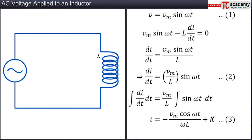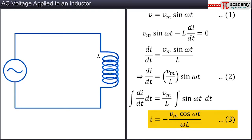Since we know that the voltage source is supplying a time-dependent voltage which is symmetric about zero, we can assume the same to be true of the current. Hence, we take the constant of integration as zero. Equation 3 can then be written as I equal to minus Vm cos omega t by omega L. Let this be equation 4.